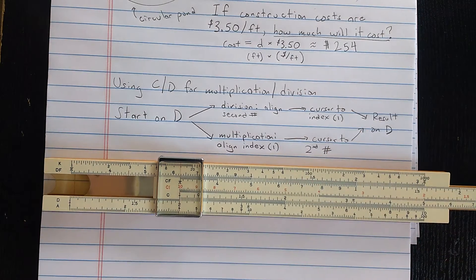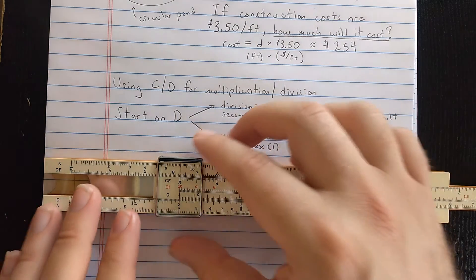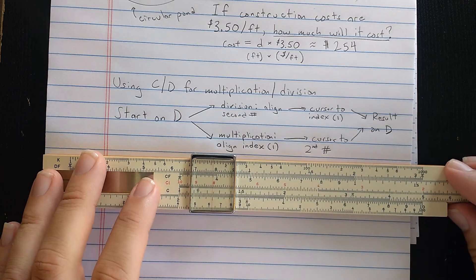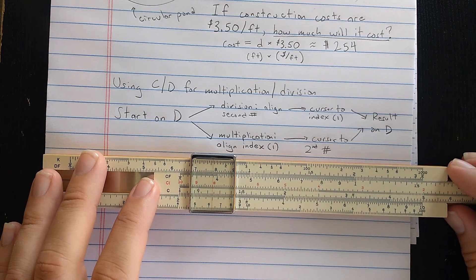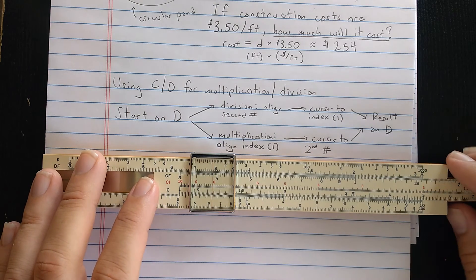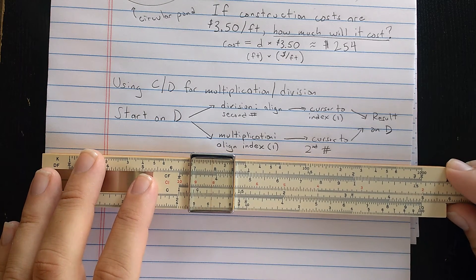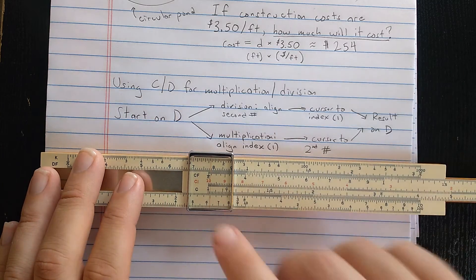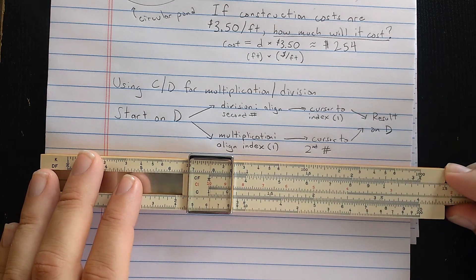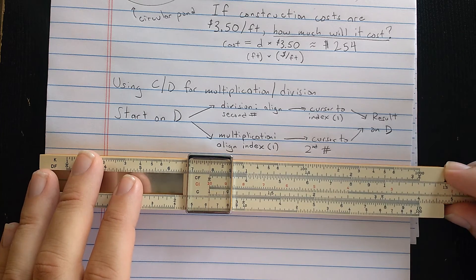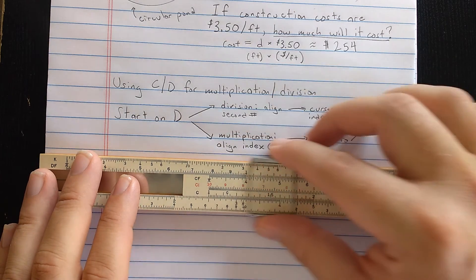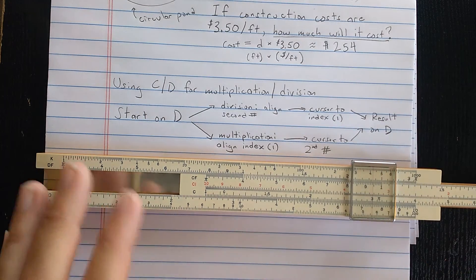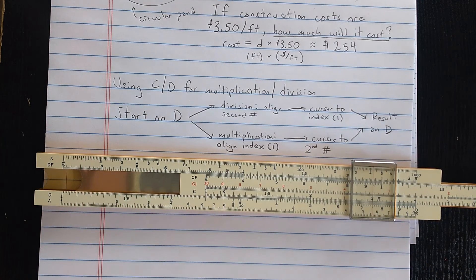For multiplication, you align one of the indices. So let's say we start with 2.5. I want to multiply 2.5 times 3. Okay. So I find the 2.5 on the D scale, and I align the index with it. Then I move out to the second number on the C scale, the 3. And I read the correct result, 7.5.